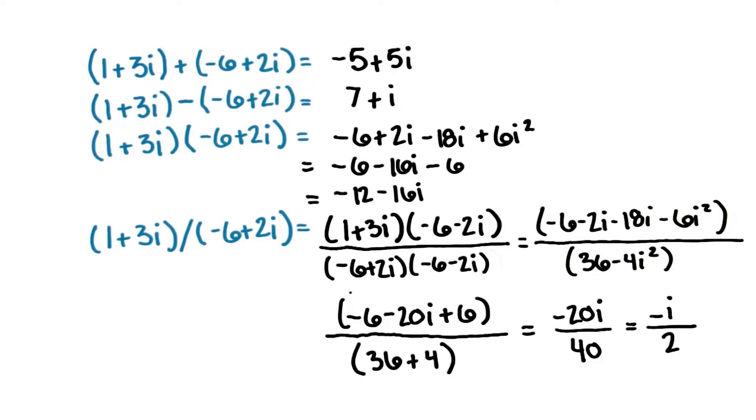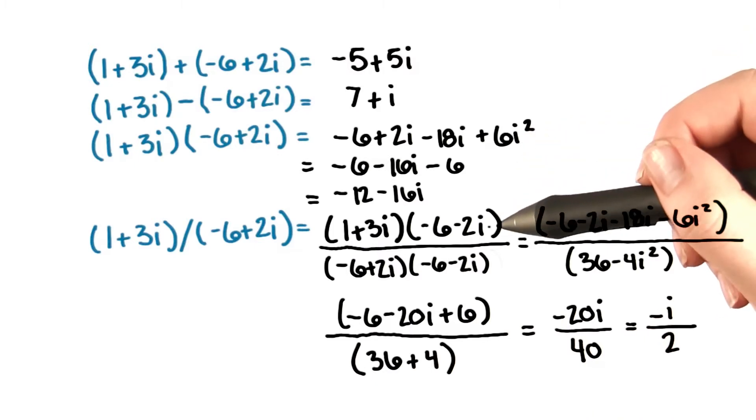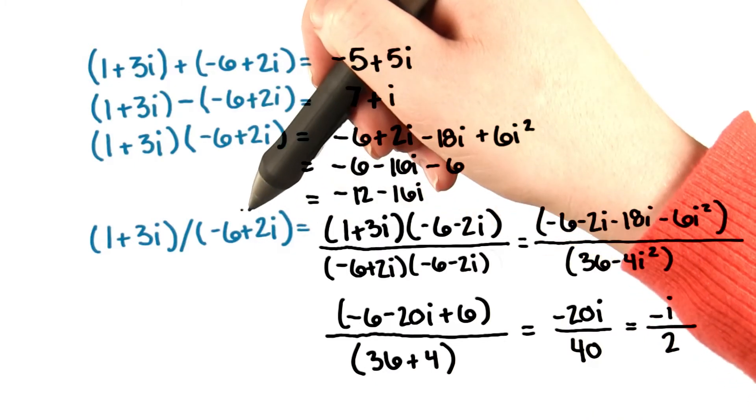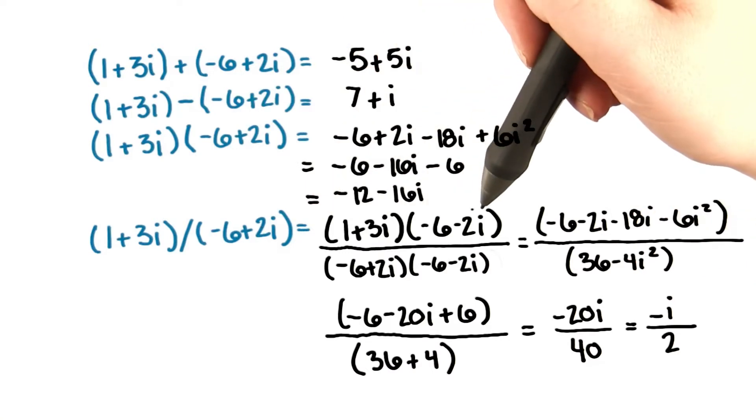To change the denominator in this way, we multiply both the denominator and the numerator by the complex conjugate of the original denominator. So negative 6 minus 2i in this case.